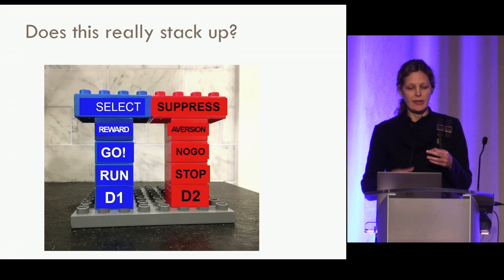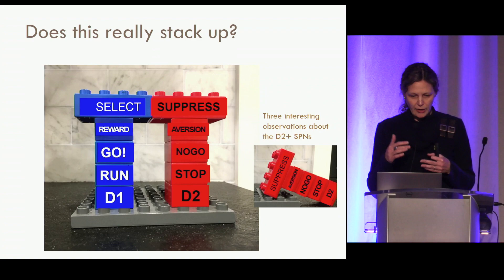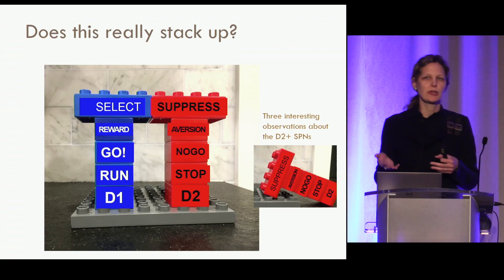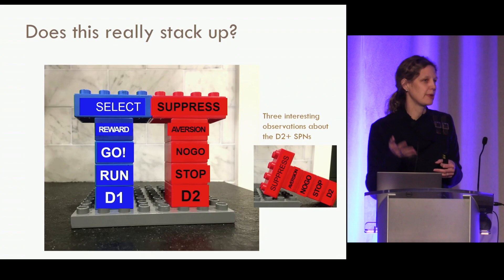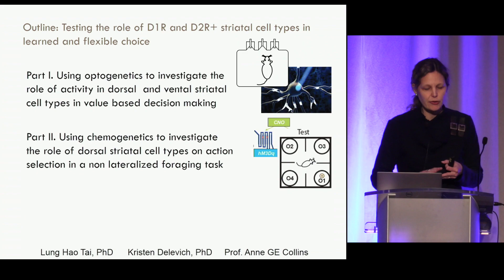In this framework, one pathway is important for selection of choice and the other for suppression of choice. But I thought this audience would be interested in observations we've made that go somewhat against this perfect dichotomy. The D2-expressing pathway and its function in choice looks a little more complicated. I'll tell you about three experiments, broken into two parts.